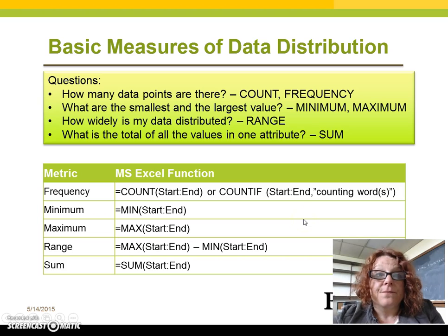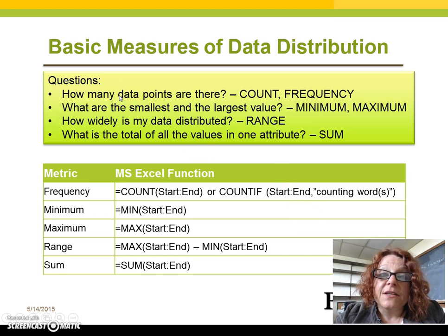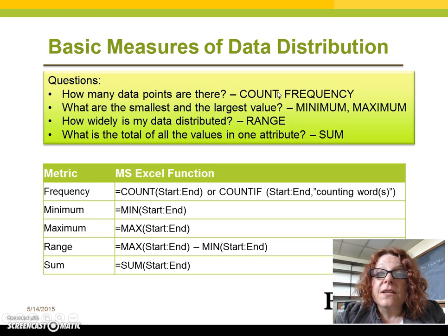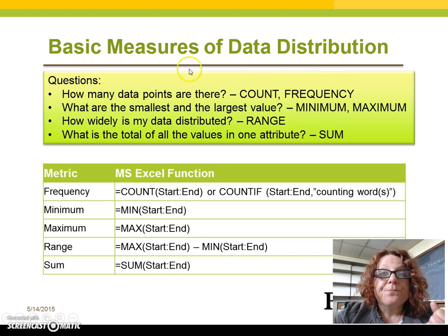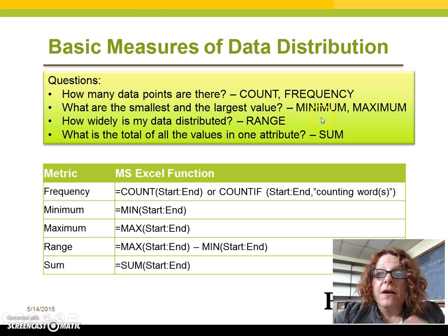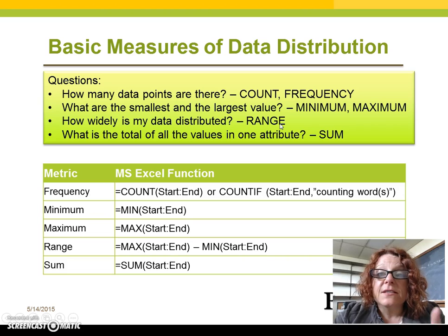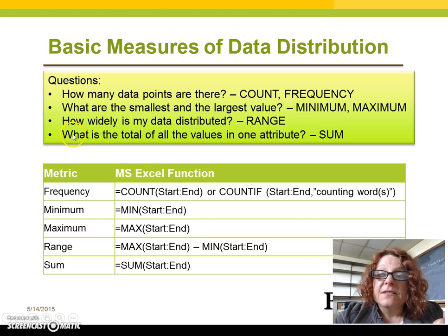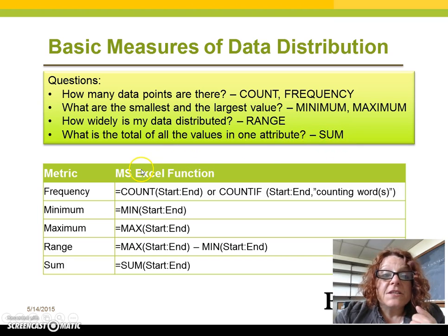So what have we done? Well, we've asked ourselves some really important questions about our data set. We've asked how many data points there are, so we've counted our data points. We've also looked at the frequency of data points within the categories we have built, such as strongly agree or disagree, or our age numbers. We've asked what are the smallest and largest values — that is, our minimum value and maximum value. From that we can calculate the range; for example, our age range is the difference between 11 years and 45 years. In some cases we can also use the sum of values to get valuable information about our attribute values.